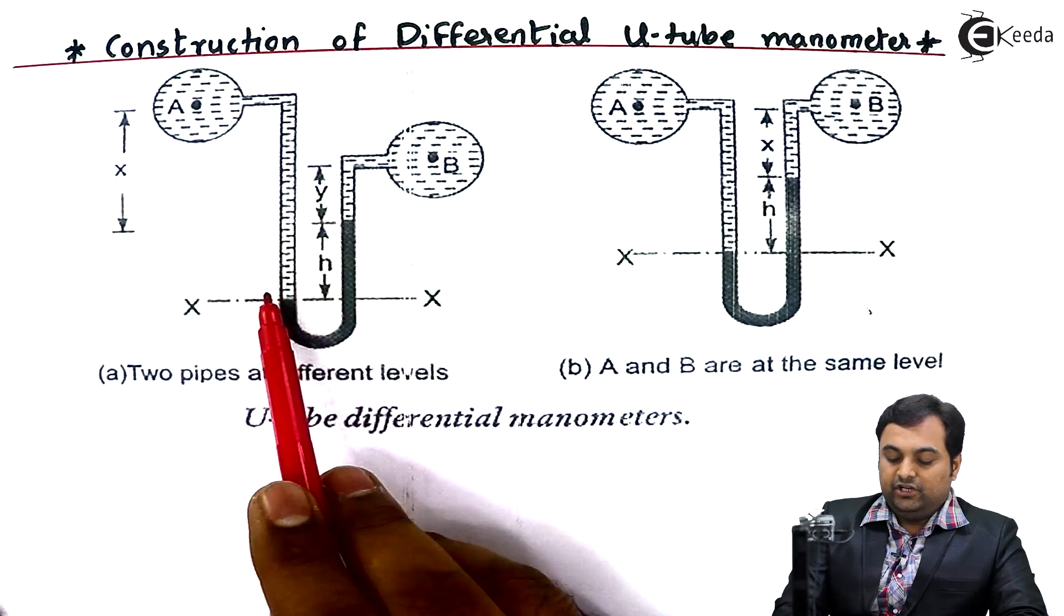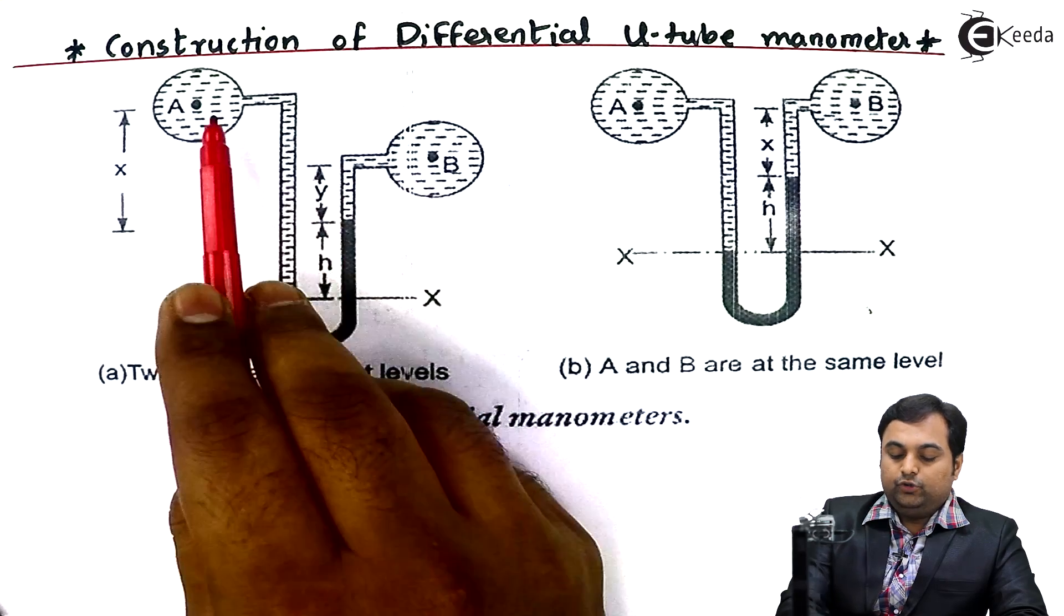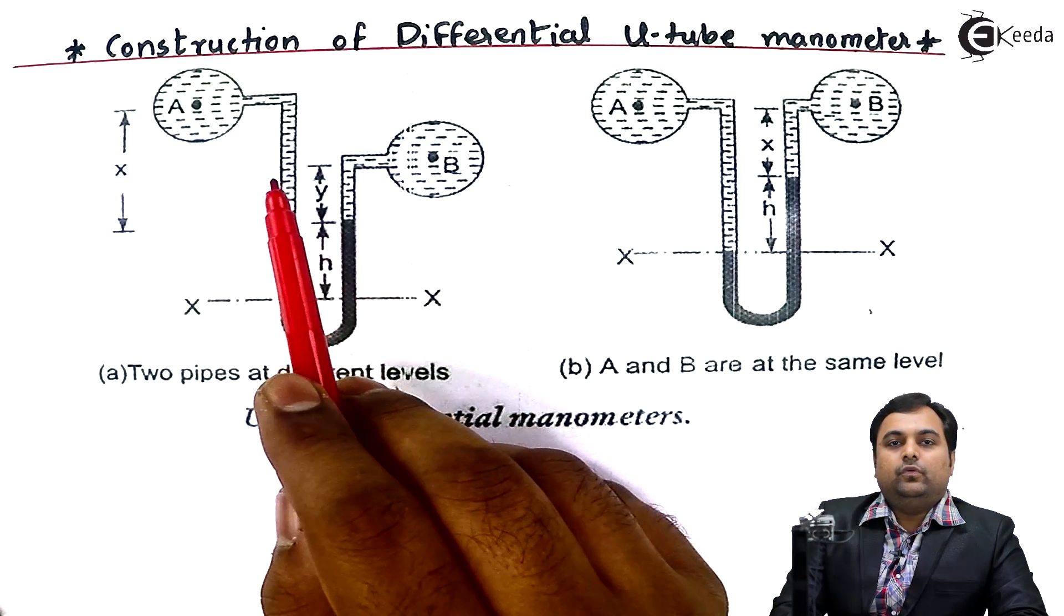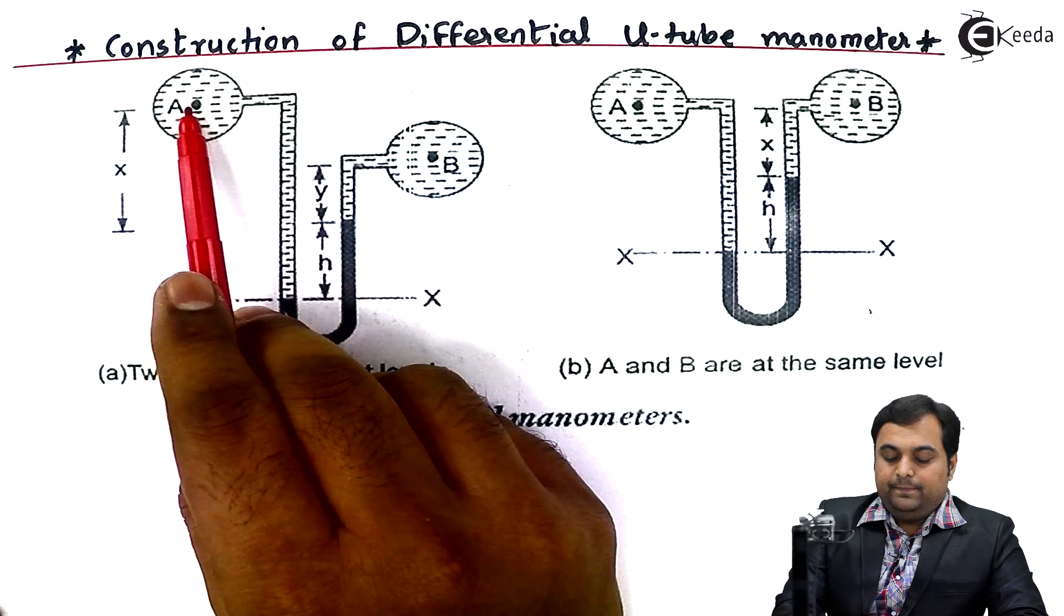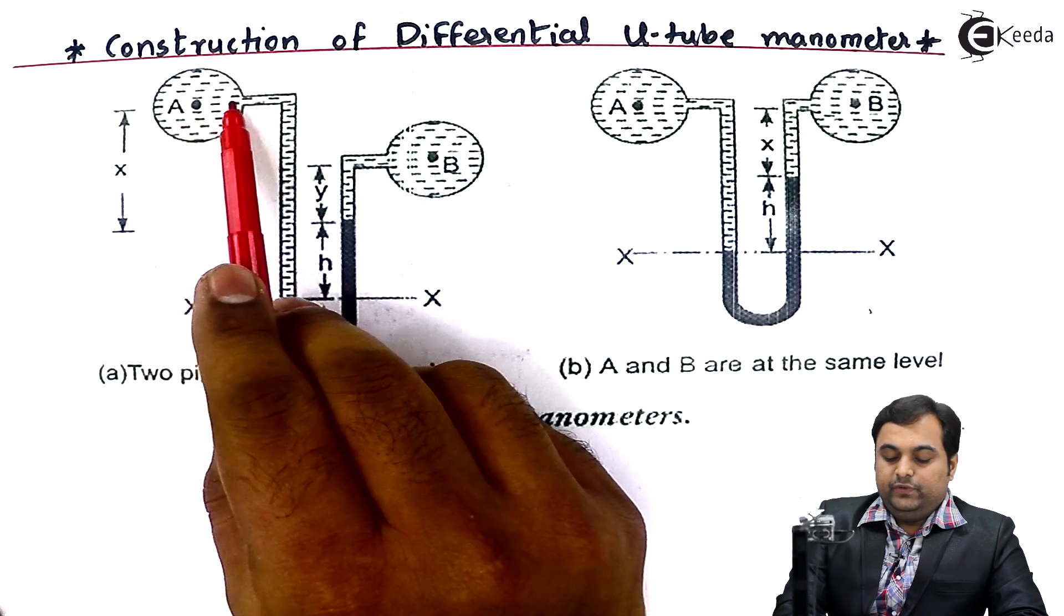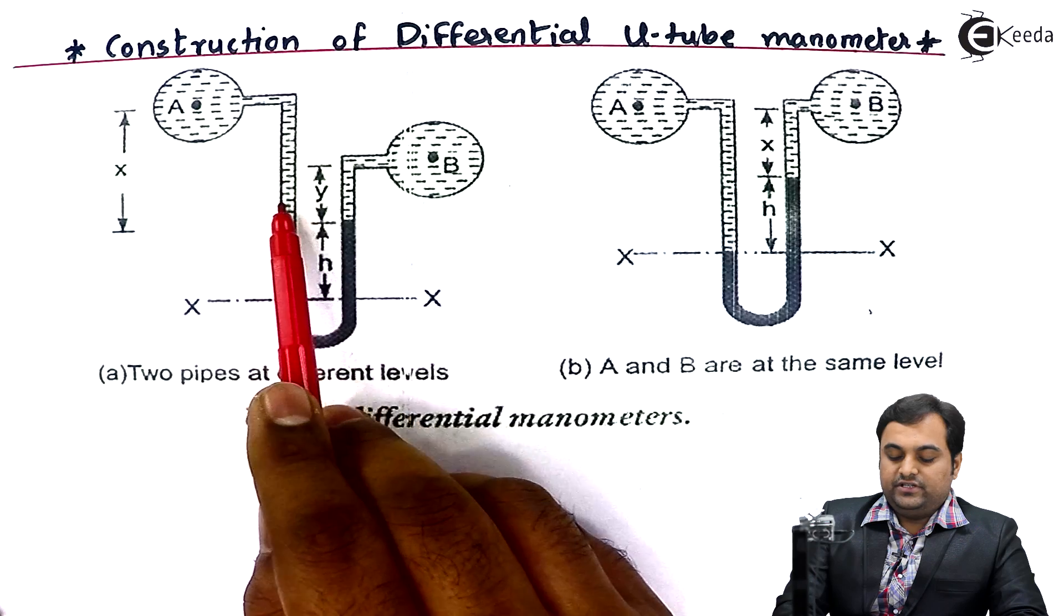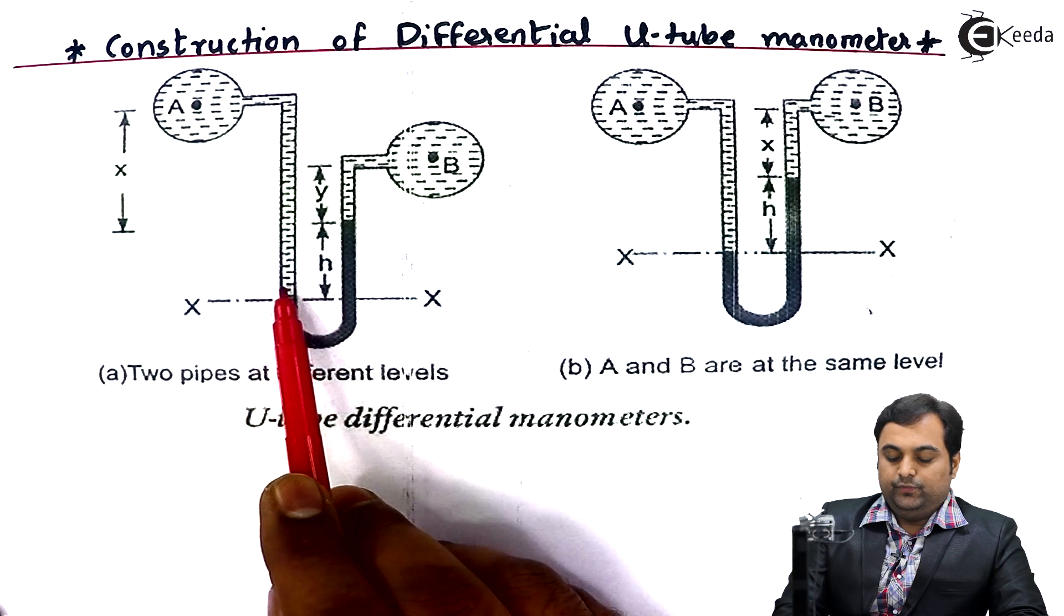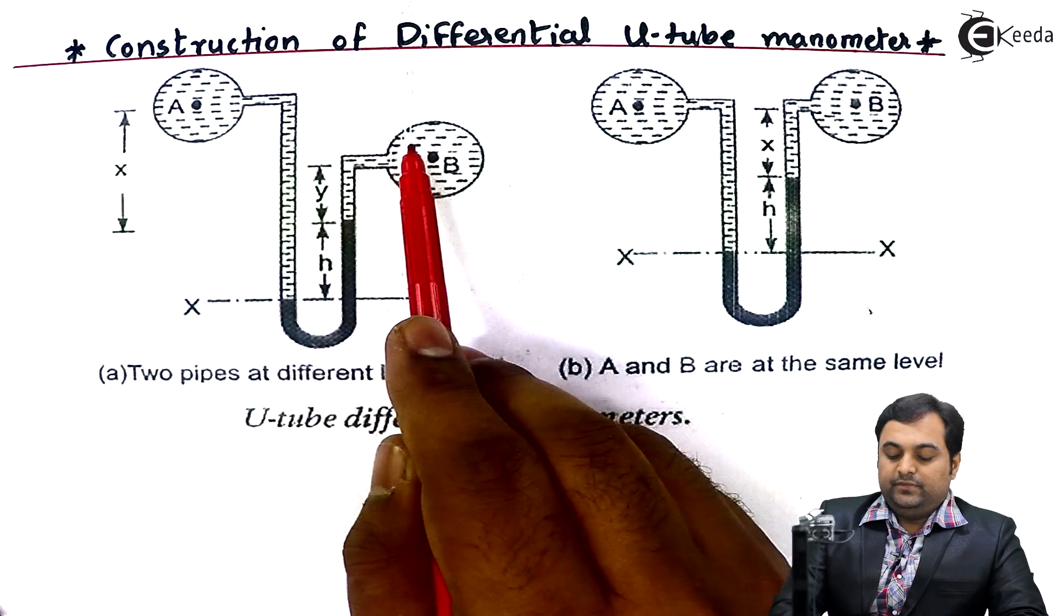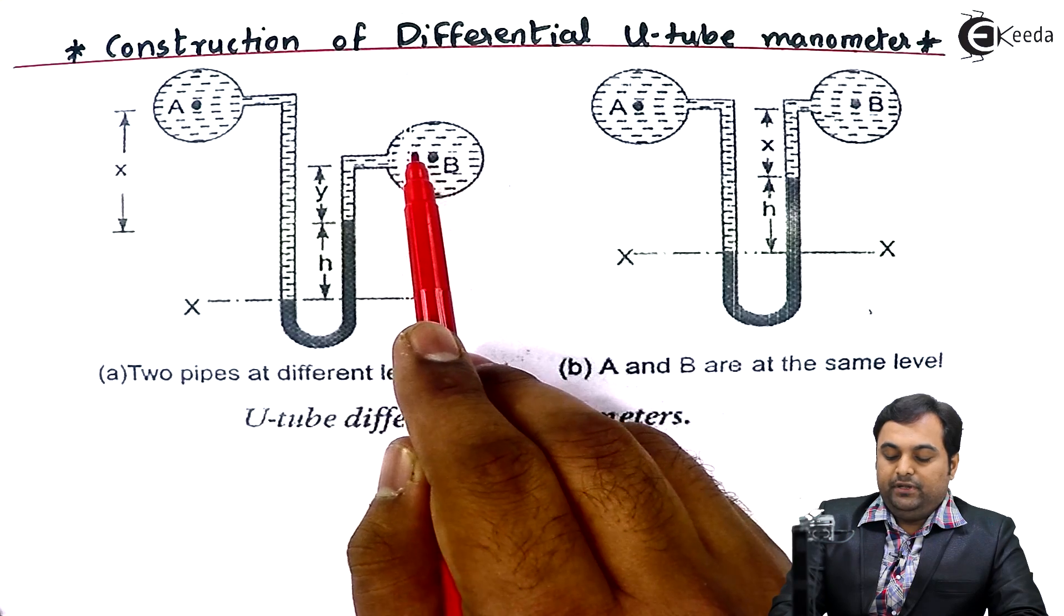When we want to measure the difference in pressure of two different liquids, we connect this differential U-tube manometer to both the pipes. From pipe A the fluid will enter into the left limb of the U-tube manometer.